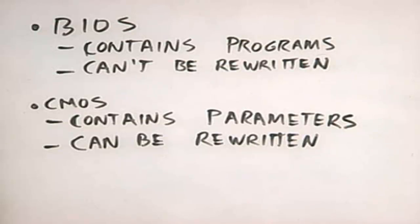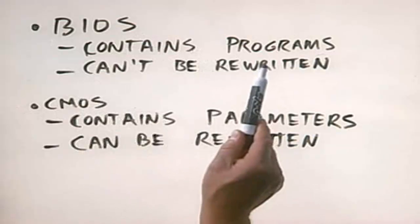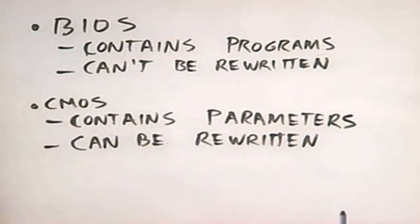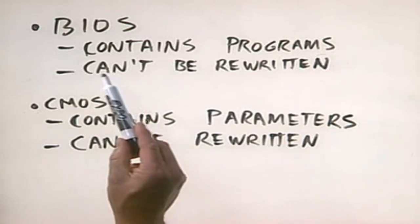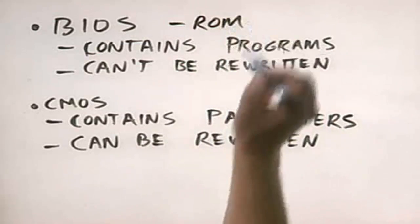Instead, PCs use a second RAM chip in conjunction with the ROM chip that can be written to and read from. This is called the complementary metal oxide semiconductor — which you never hear anybody call it that — it's referred to as the CMOS. This is an important distinction to make because a lot of folks get these two components mixed up. The BIOS contains the programs the CPU needs to communicate with devices on the motherboard. The BIOS is hardwired — it cannot be rewritten. It's ROM memory, read-only memory.